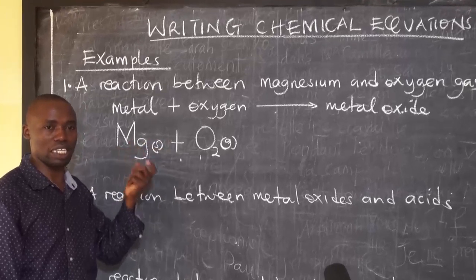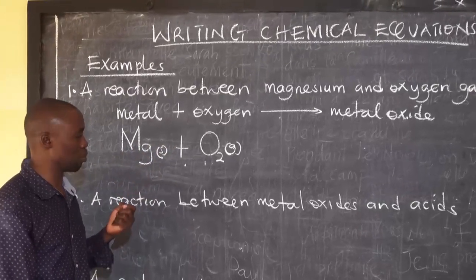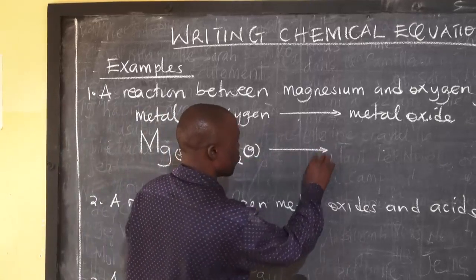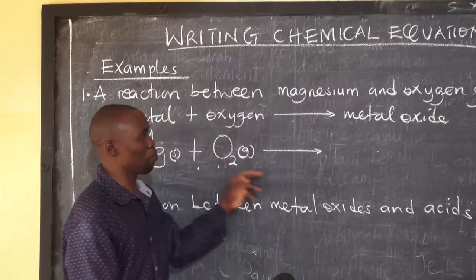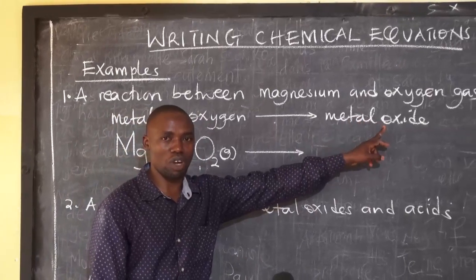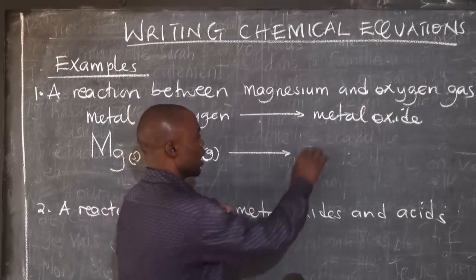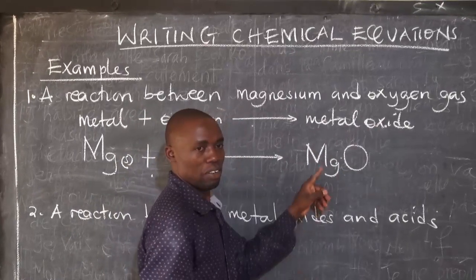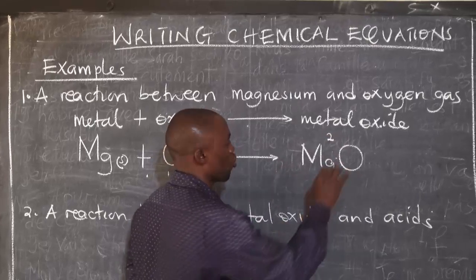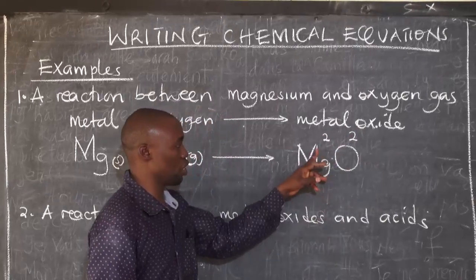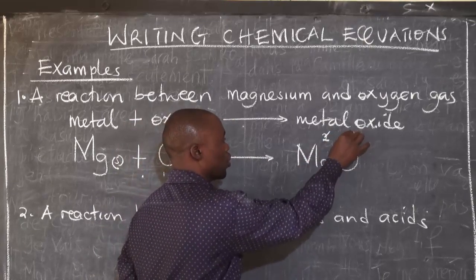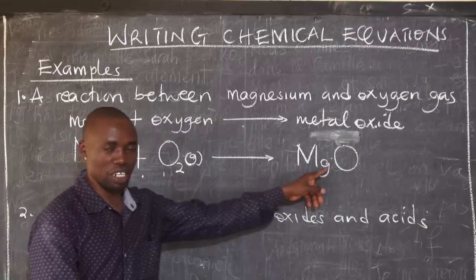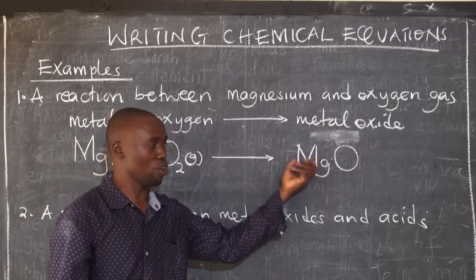We know that all metals are solids except mercury. Oxygen is a gas. We arrive at magnesium oxide on the product side. To come up with the correct formula, we need the knowledge of valences. Magnesium is Mg, our oxide is O, the valence of magnesium is 2 and the valence of the oxide is also 2 — so we cancel them. We arrive at the formula MgO. To come up with the correct formula, you need to exchange the valences.